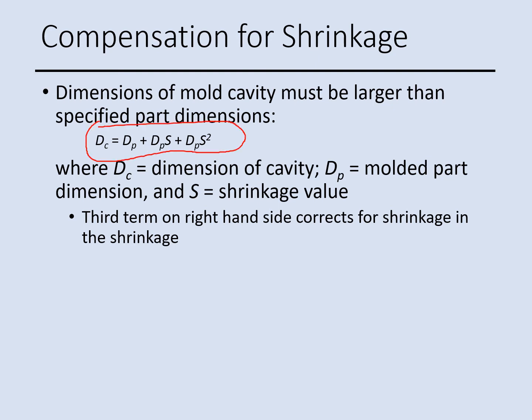In the shrinkage equation, DC is the dimension of the cavity, DP is the molded part dimension, and S is the shrinkage value. The shrinkage is multiplied by the molded part dimension, raised to the power of 2, then multiplied again by the molded part dimension to give the cavity dimension.